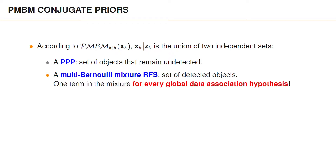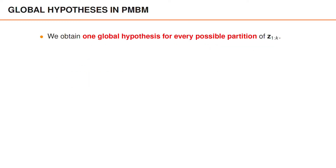In the multi-Bernoulli mixture, we obtain one term for every possible global data association hypothesis. It's simple to describe and understand what a global data association hypothesis is in extended object tracking, but unfortunately the number of global data association hypotheses grows very quickly. It turns out that we get one global hypothesis and thus one multi-Bernoulli random finite set for every partition of the measurements Z1 to Zk. The term partition refers to separation of the complete set of measurements into disjoint subsets.